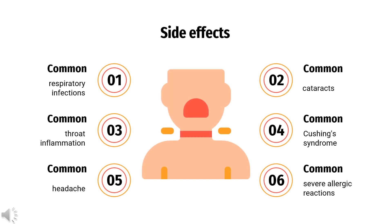What are the side effects of taking beclomethasone? Common side effects with the inhaled form include respiratory infections, headaches, and throat inflammation. Serious side effects include an increased risk of infection, cataracts, Cushing's syndrome, and severe allergic reactions. Long-term use of the pill may cause adrenal insufficiency. The pills may also cause mood or personality changes. The inhaled form is generally regarded as safe in pregnancy. Occasionally it may cause a cough upon inhalation. Deposition on the tongue and throat may promote oral candidiasis, which appears as a coating, possibly with irritation.